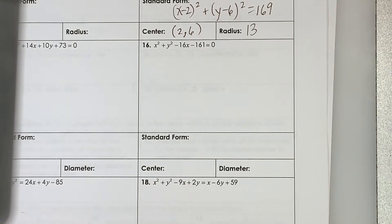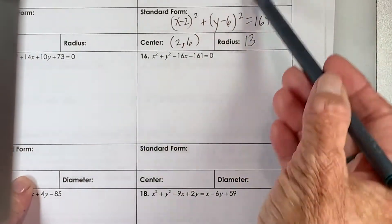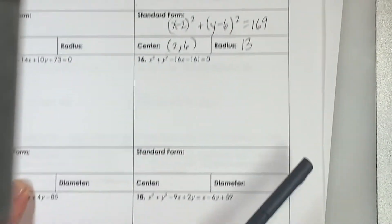I received a phone call in the middle of that other video, so we'll split this up into two parts. I was just, I believe, taking the square root of 169 to get 13 for our radius.